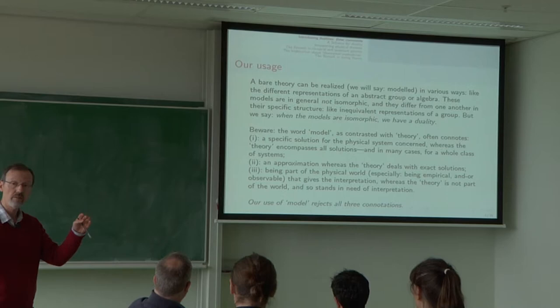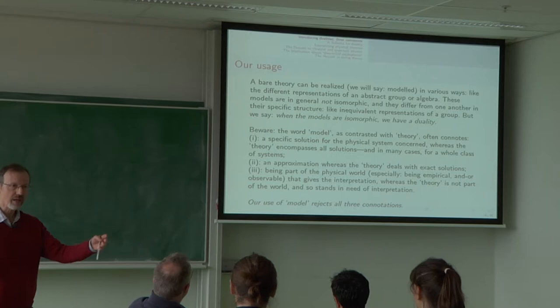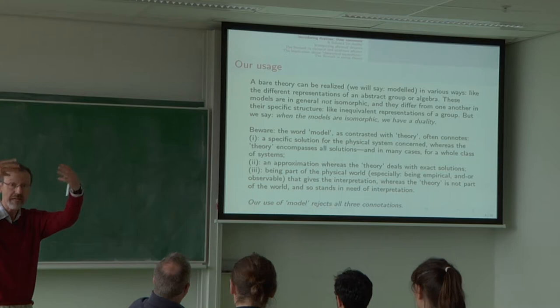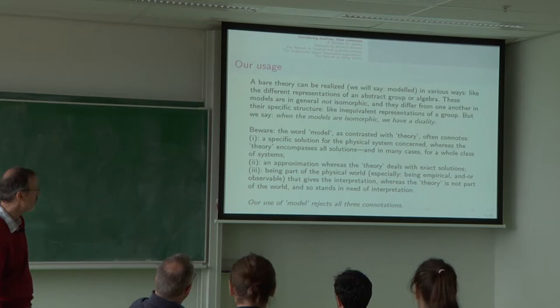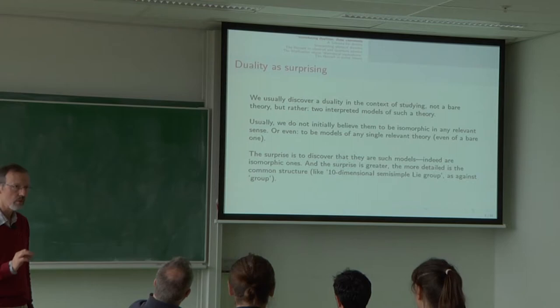Newtonian mechanics is the theory. The simple harmonic oscillator is a model. Or even a solution of the simple harmonic oscillator is my model of this particular pendulum. An approximation is another connotation of the word model. The pendulum actually has friction and many complexities, but I will model it with a simple harmonic oscillator. An approximation. And the other connotation of model is a model is in the world. I want you to understand ideal gases. I imagine billiard balls. They are in the world. It is an approximation to the complexity. Our concept of model, or use of the word model, is against all three of these connotations.